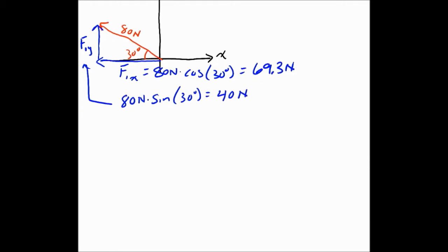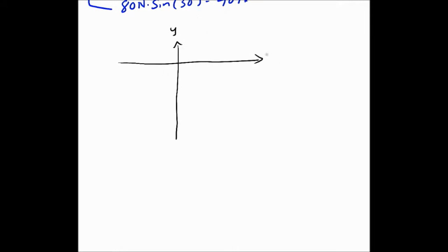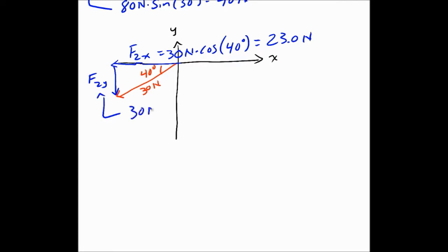So let's convert the other one. So it has an x component and a y component. So this is f2x and this is f2y. So this would be, for the x component, would be 30 newtons times the cosine, because it's adjacent, which is 23.0 newtons. And then the y component is 30 newtons times the sine of 40, which is 19.3 newtons.